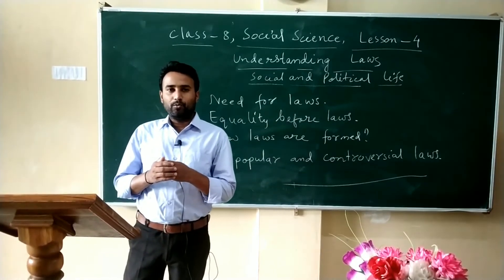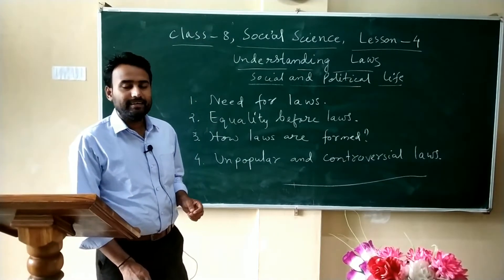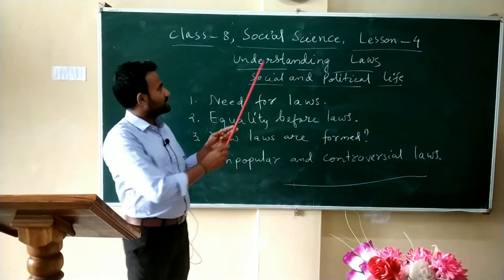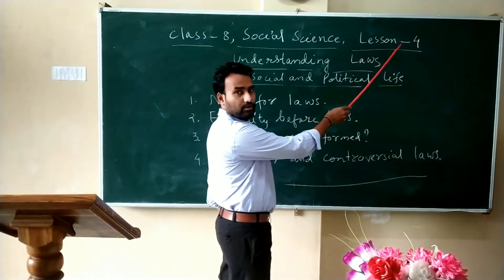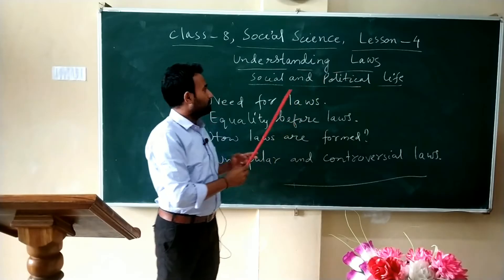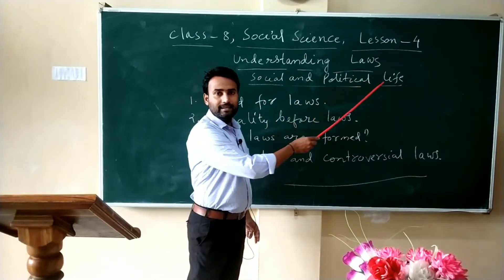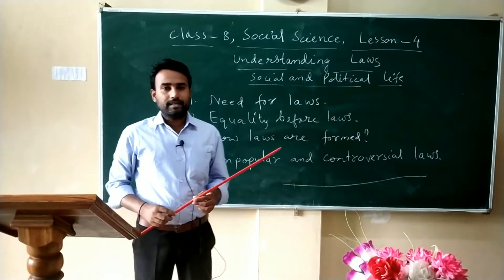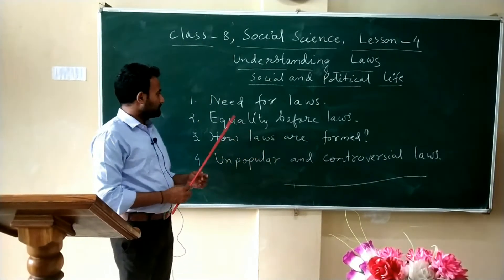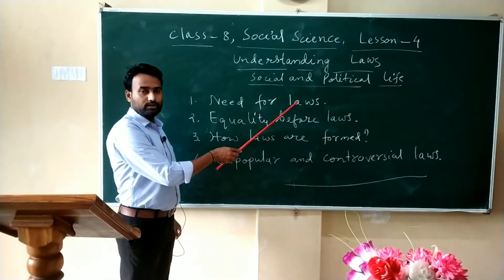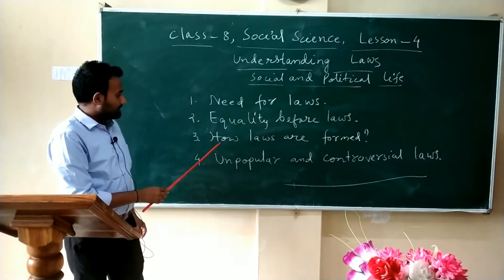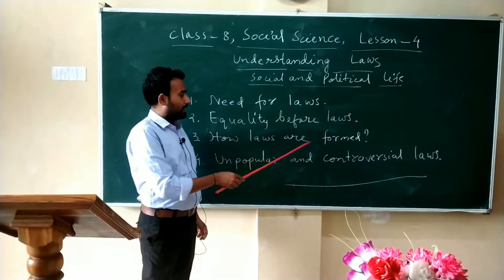Hello children, welcome. Today in this e-class we are going to learn Social Science, lesson number four. The name of the lesson is 'Understanding Laws' from the Social and Political Life part. The key points we are going to learn are: need for laws, equality before laws, how laws are formed, and unpopular and controversial laws.